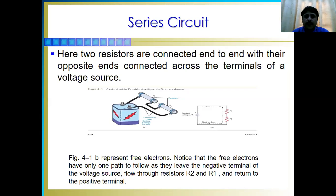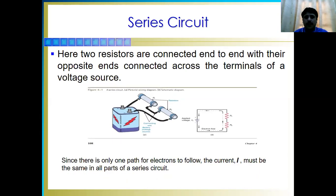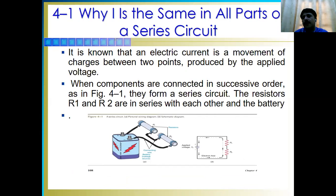The three electrons have only one path to flow as they leave the negative terminal of the voltage source, flow through resistor two, then resistor one, and return to the positive terminal. This is a simple series circuit where two terminals are connected with each other, sharing the same voltage source, and having only one path for electrons. If there were an alternative path, we would say it is a parallel circuit, but this time it is only series. Since there is only one path, the current must be the same in all parts of the series.